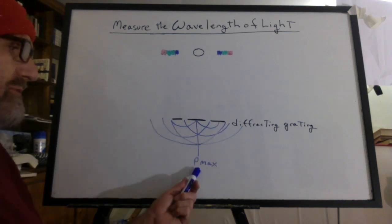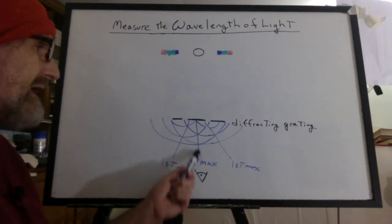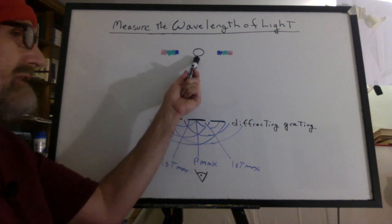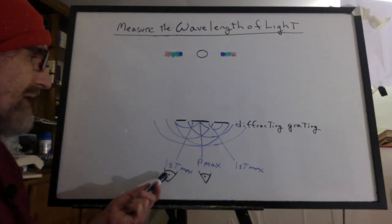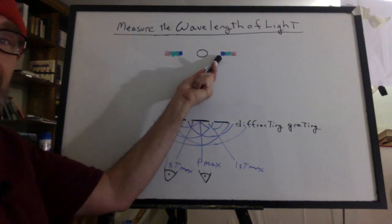Right down the middle is the principal maximum. Off to each side is the first maximum. Looking straight ahead, we see the principal maximum as the light bulb. If I move my eye over to here and I look along the first maximum, I trace it back and see the blue light over here.